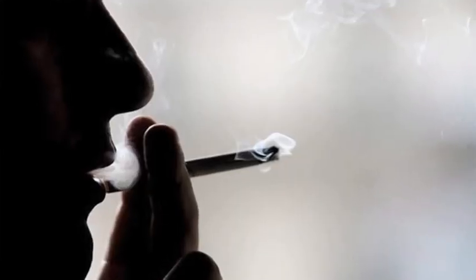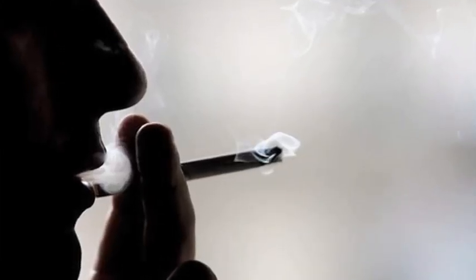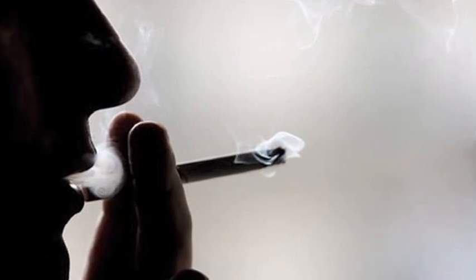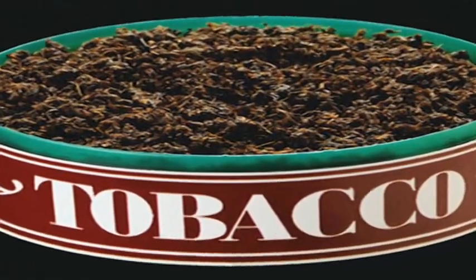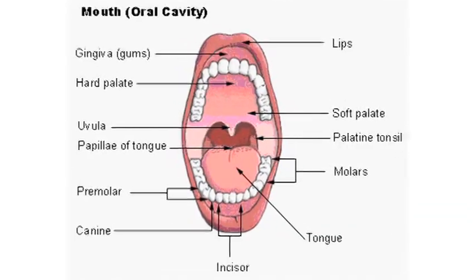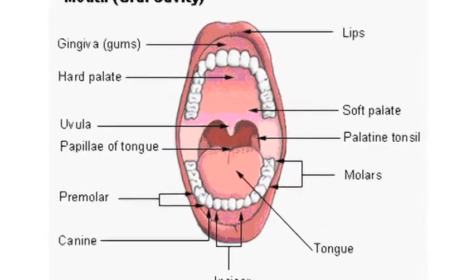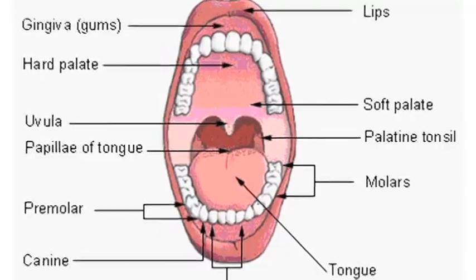These cancers are most typically caused either by smoking or by chewing tobacco. Now they can occur for other reasons as well, but those are probably the most common causes. They are usually a painless lump inside the mouth or on the tongue that seems to be getting larger. They may bleed.